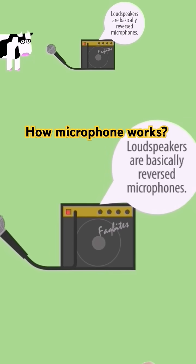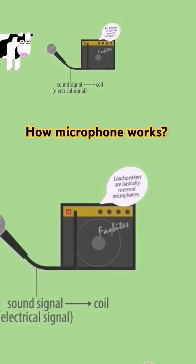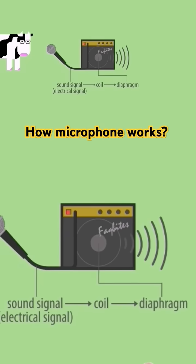Loudspeakers work in reverse. Here the incoming sound signal moves the coil, which in turn moves the diaphragm, creating sound waves.